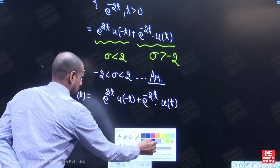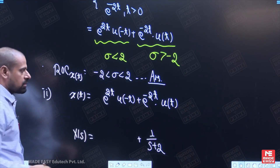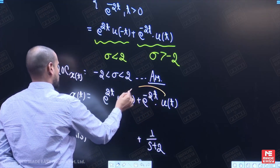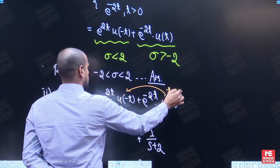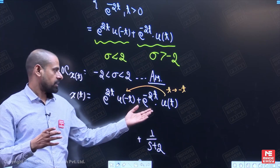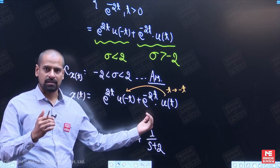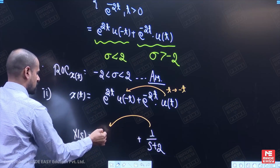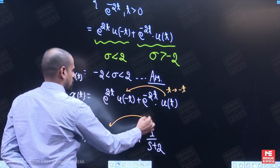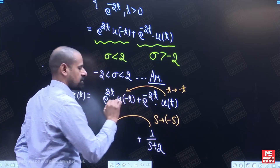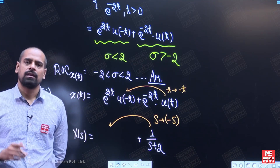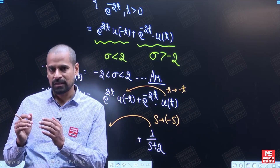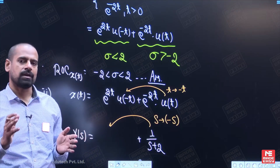Now we have to write down the Laplace of the first term. If we write down the first term with the help of the second term, we have to replace t with minus t. So if we replace t with minus t, we can write down the first term using the second term. Similarly, we will write down the Laplace of the first term using the time reversal property. According to the time reversal property, if t is replaced by minus t in the time domain, then in the Laplace domain, s will be replaced by minus s.